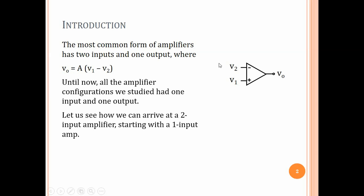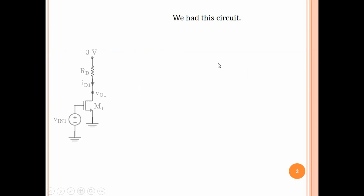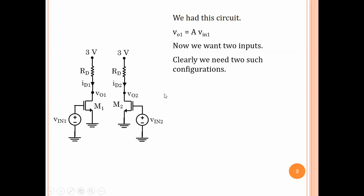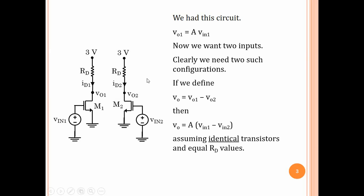Until now, all the amplifiers we have studied in this course had one input and one output. Now let us think about how we can arrive at a two input amplifier starting with the one input amplifier. We had this circuit with V_O1 equal to some gain times V1. Now we want two inputs. Clearly we need two such configurations. If we define v_o = v_o1 - v_o2, then v_o = A(v1 - v_o2) assuming identical transistors and equal RD values. Only then will this A be the same for the circuit on the left and the circuit on the right.